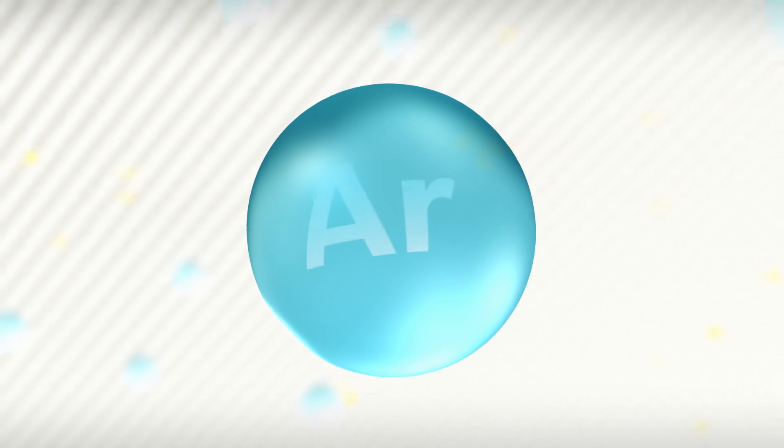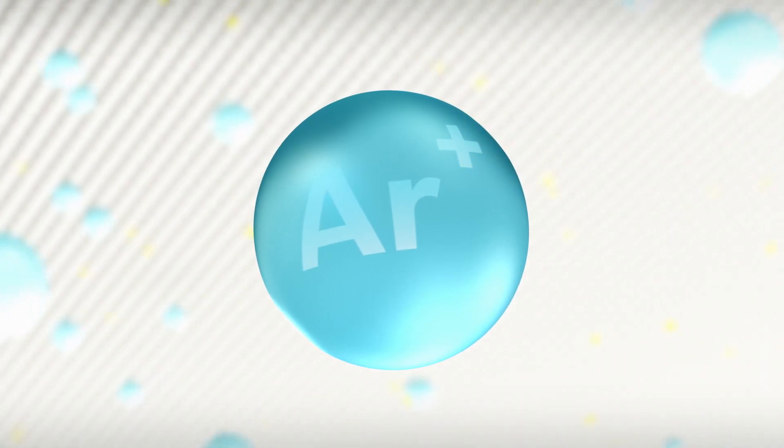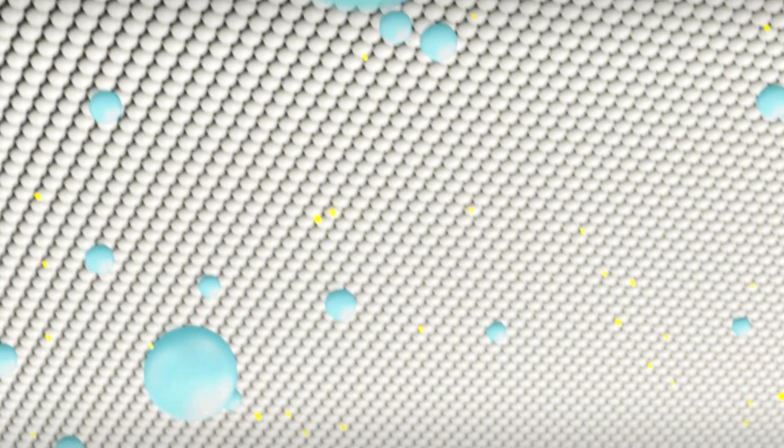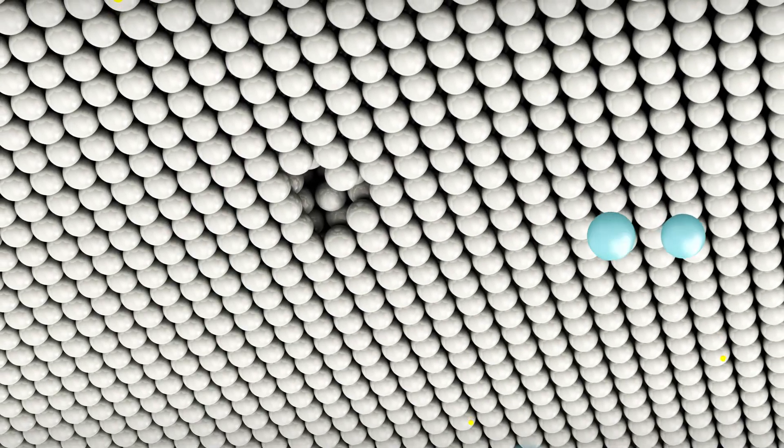The sputtering target is negatively charged. Therefore, the argon ions are attracted towards its surface. Let's see what happens.